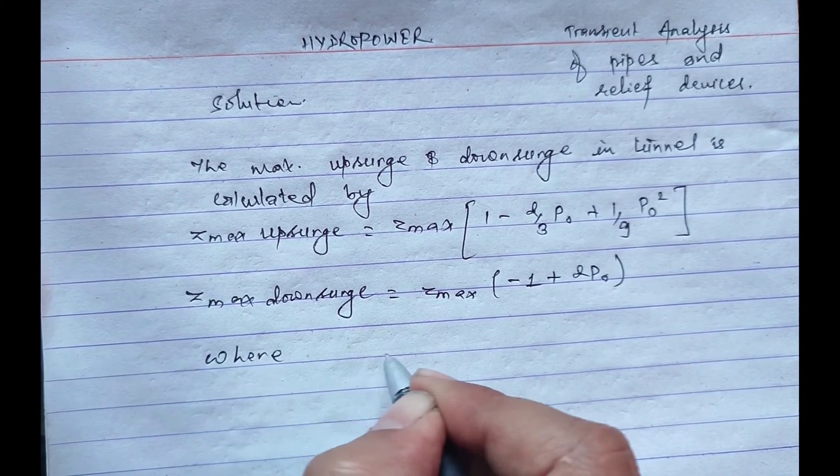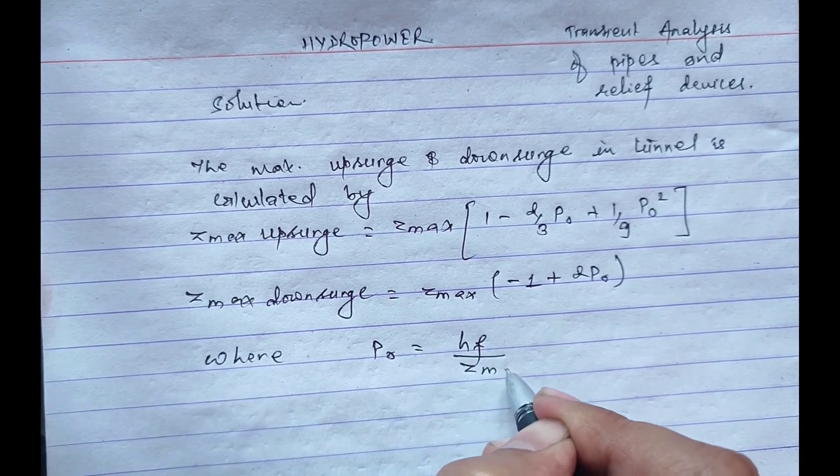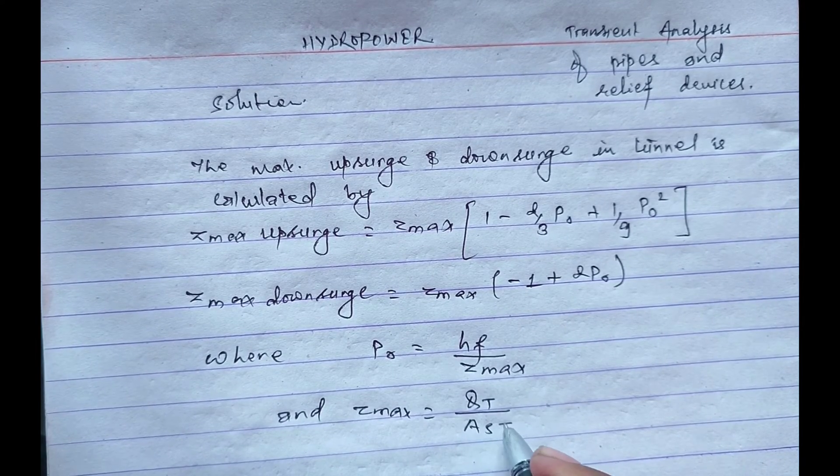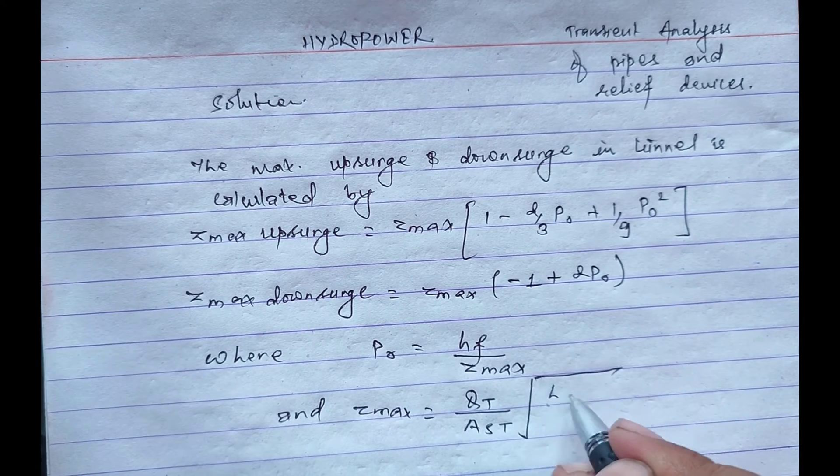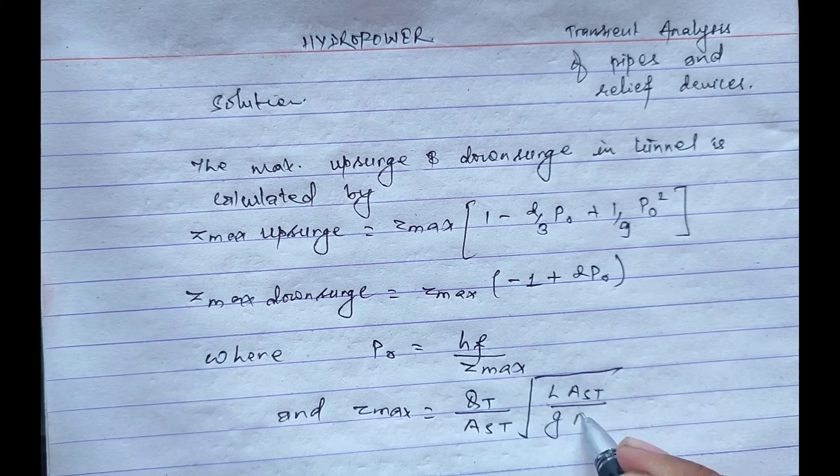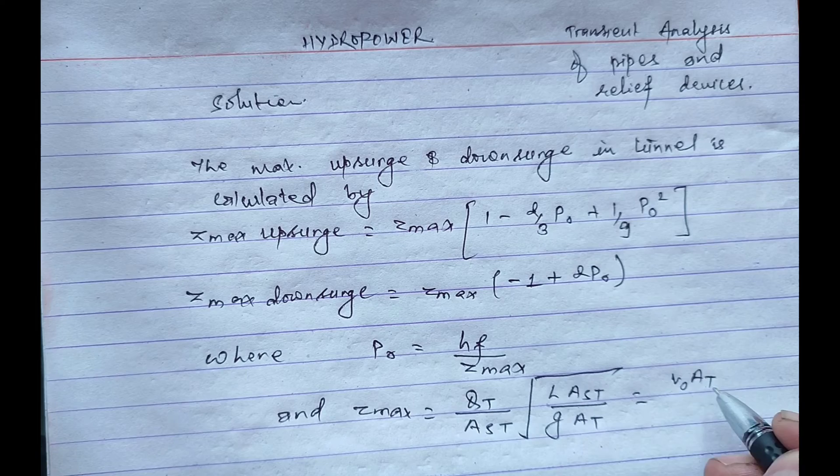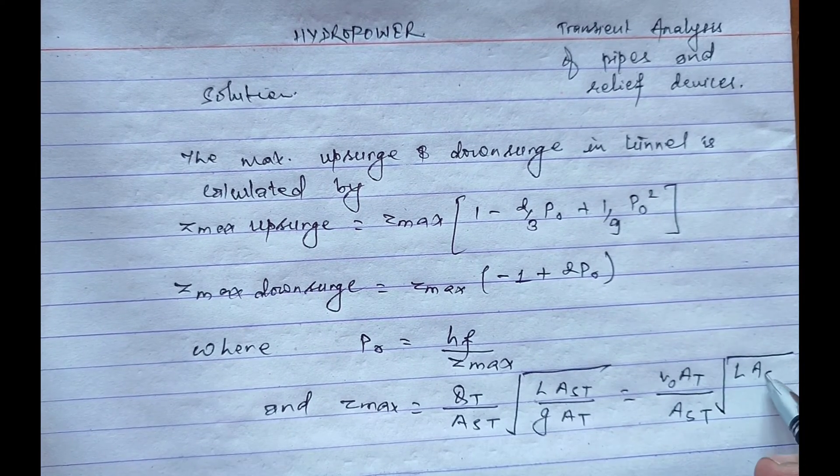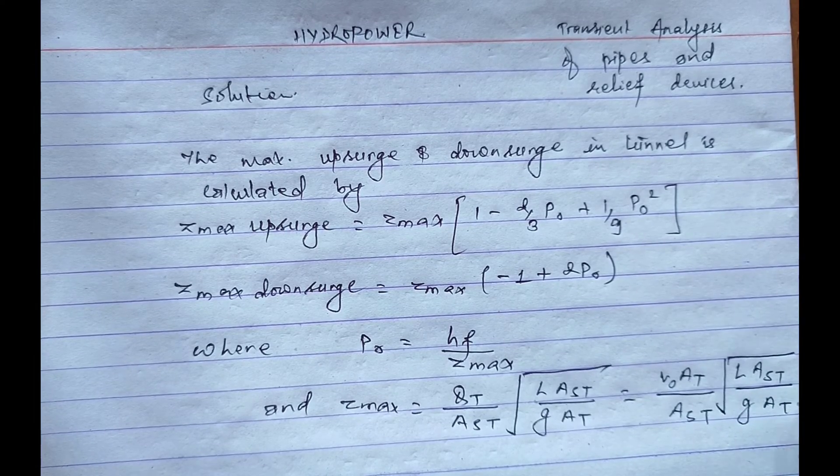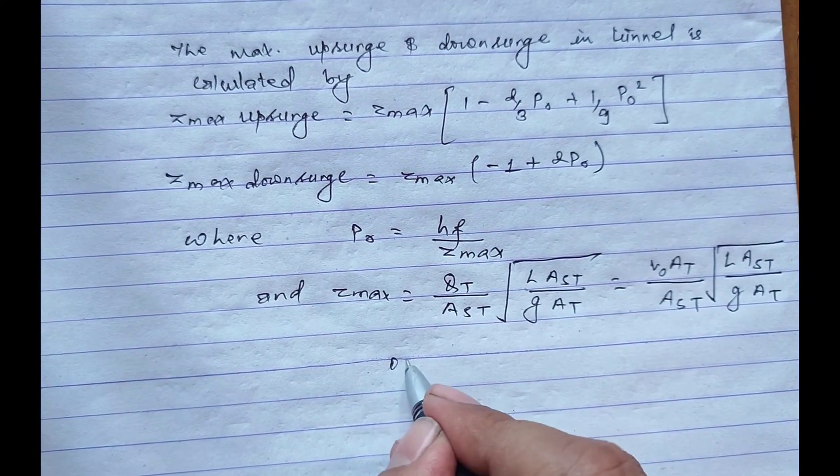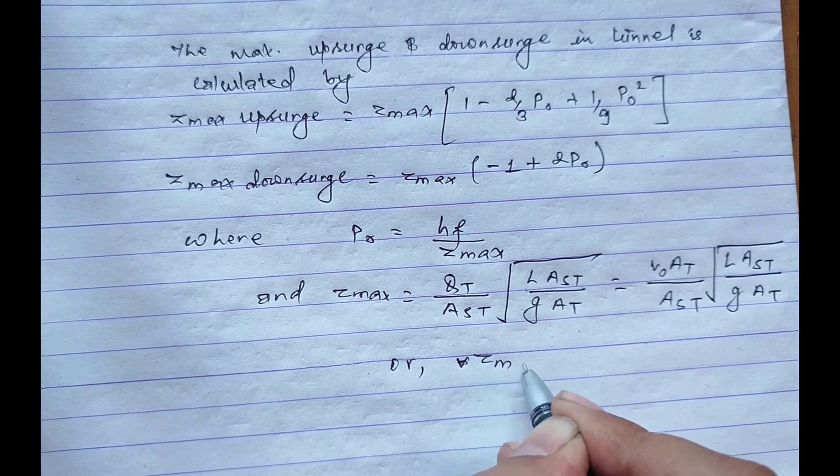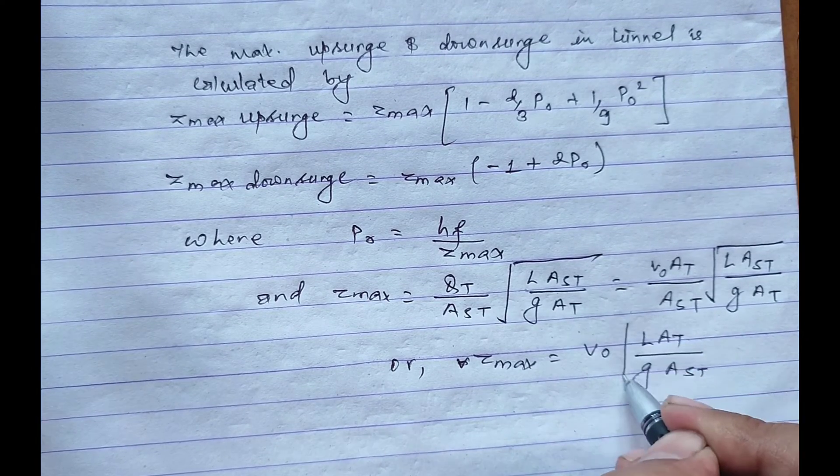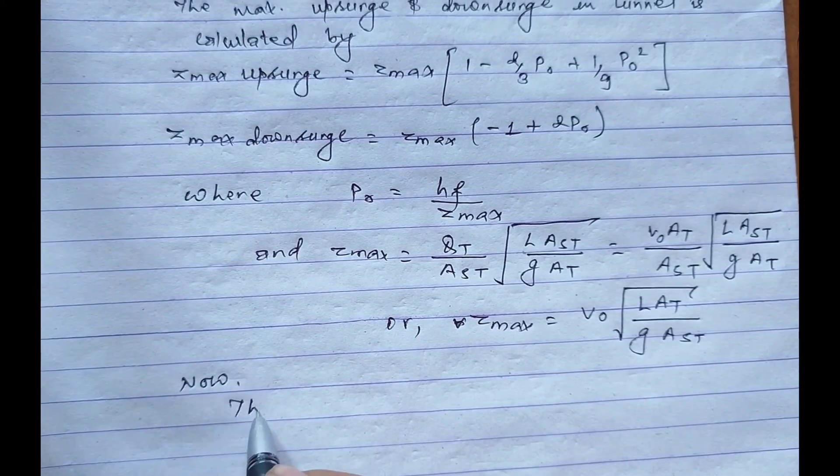Where P_0 equals h_f divided by z_max, and z_max equals Q times L divided by A_st, square root of L times A_st divided by g times A_t. This can be written as P_0 equals h_f times A_t divided by A_st, square root of L times A_st divided by g times A_t. Or z_max equals v_0 square root of L times A_t divided by g times A_st.